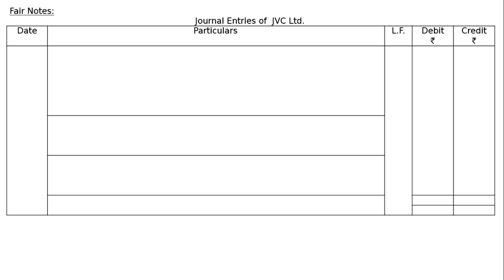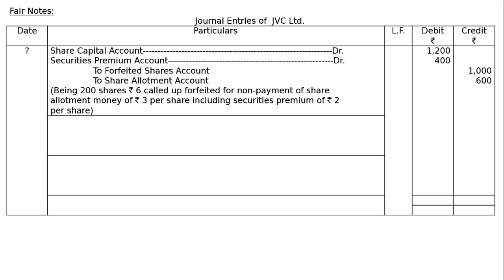Journal entries of JVC Limited. For forfeiture: Share Capital Account debited — 200 shares, Rs. 6 called up (being application and allotment), that is 200 × 6 = Rs. 1200. Securities Premium Reserve debited — 200 × 2 = Rs. 400. Since the premium has not been received, it will be debited.